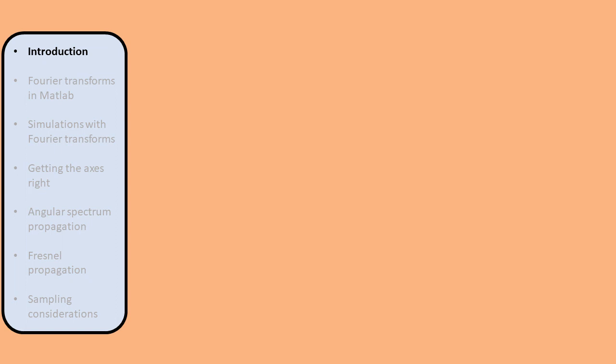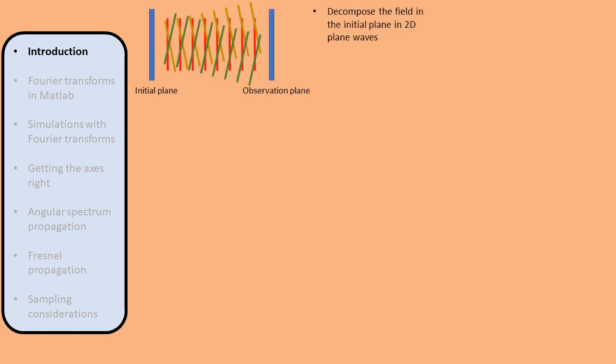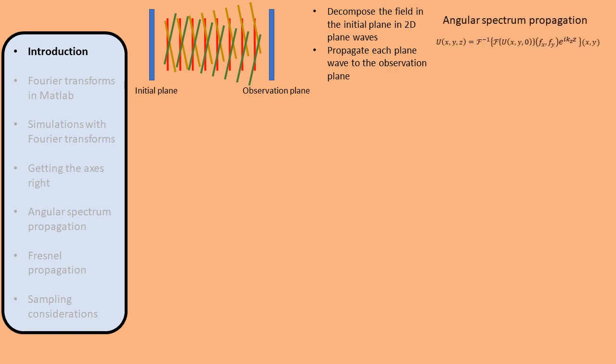In previous videos, we saw how we can calculate the propagation of a coherent optical field. There are two ways to understand propagation. The first way is to decompose the field in the starting plane into plane waves, propagate each plane wave separately, and then add the propagated plane waves together in the observation plane. This method is called the angular spectrum method and can be described using Fourier transforms.